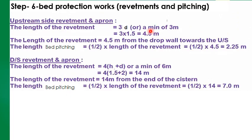Step 6 is the design of bed protection works — revetments and pitching. On the upstream side, length of revetment = 3 × h1 = 3 × 1.5 = 4.5 m (minimum 3 m), measured from the drop wall towards the upstream side. Length of bed pitching = half of revetment length = 4.5/2 = 2.25 m. On the downstream side, length of revetment = 4 × (h1 + d) = 4 × (1.5 + 2) = 14 m, where h1 is the full supply depth (1.5 m) and d is the depth of drop (2 m).